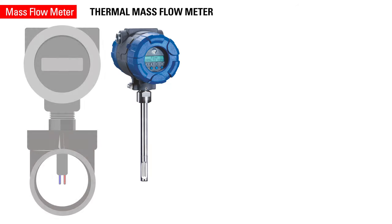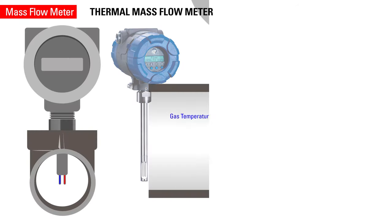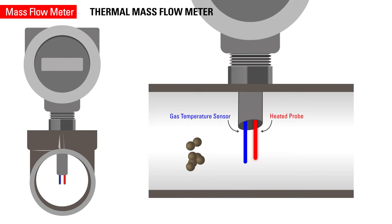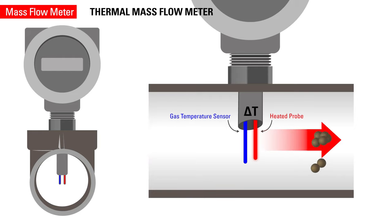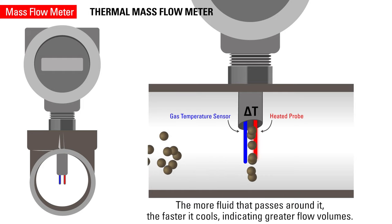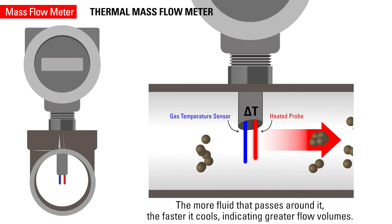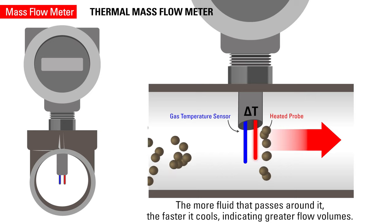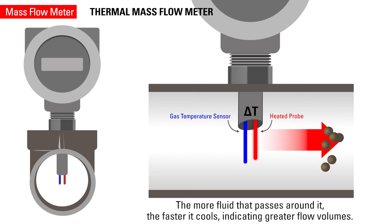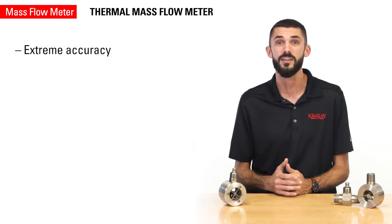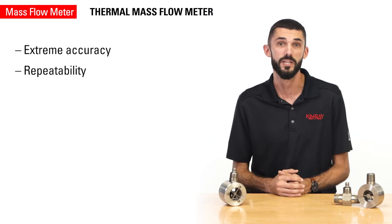A thermal mass flow meter measures the fluid volume based on the heat transfer or temperature change from a heated element positioned in the flow stream. The more fluid that passes around it, the faster it cools, indicating greater flow volumes. Thermal mass flow meters provide excellent accuracy and repeatability.